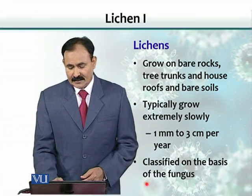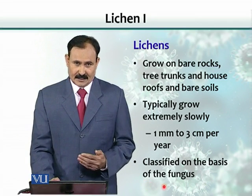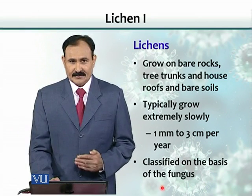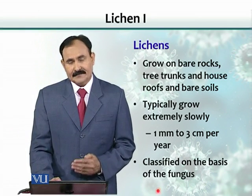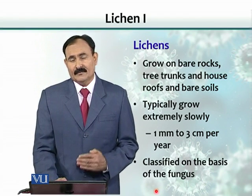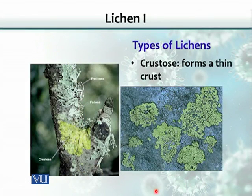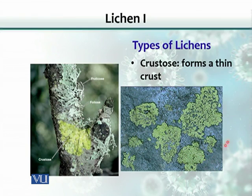Lichens are classified on the basis of the fungus, since fungus is a partner in this relationship. The types of lichen include crustose — they form a thin crust on the surfaces of bricks, roofs, and rocks, as you can see in these examples with the thin layers.